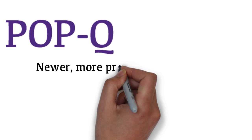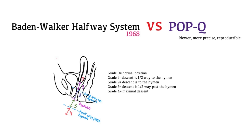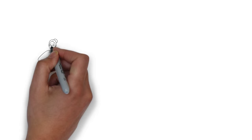Another way to grade the prolapse is POPQ, which is the pelvic organ prolapse quantification system. It is newer, more precise, and reproducible than the Baden-Walker halfway system. Some gynecologists use POPQ, while others use the Baden-Walker halfway system.